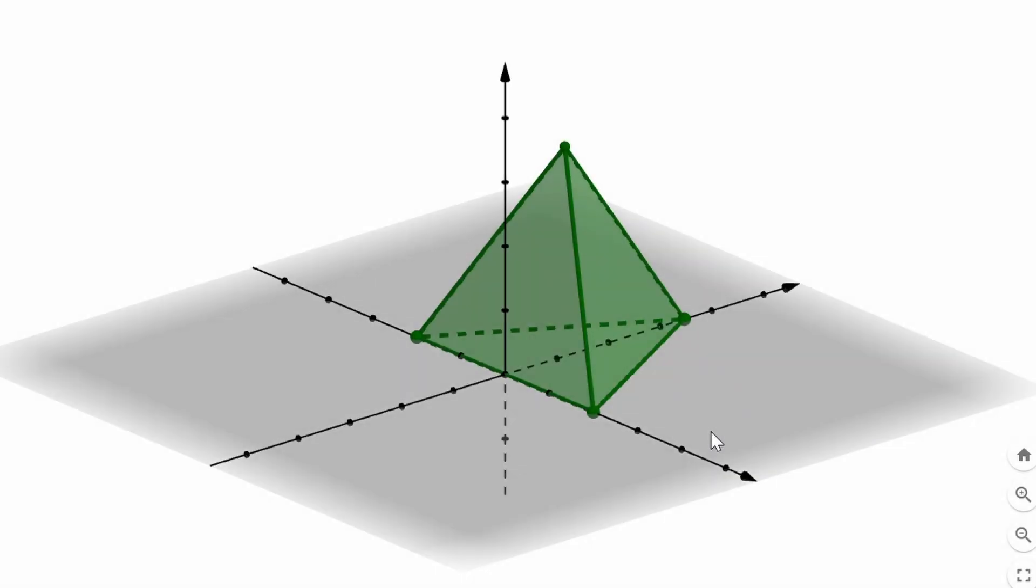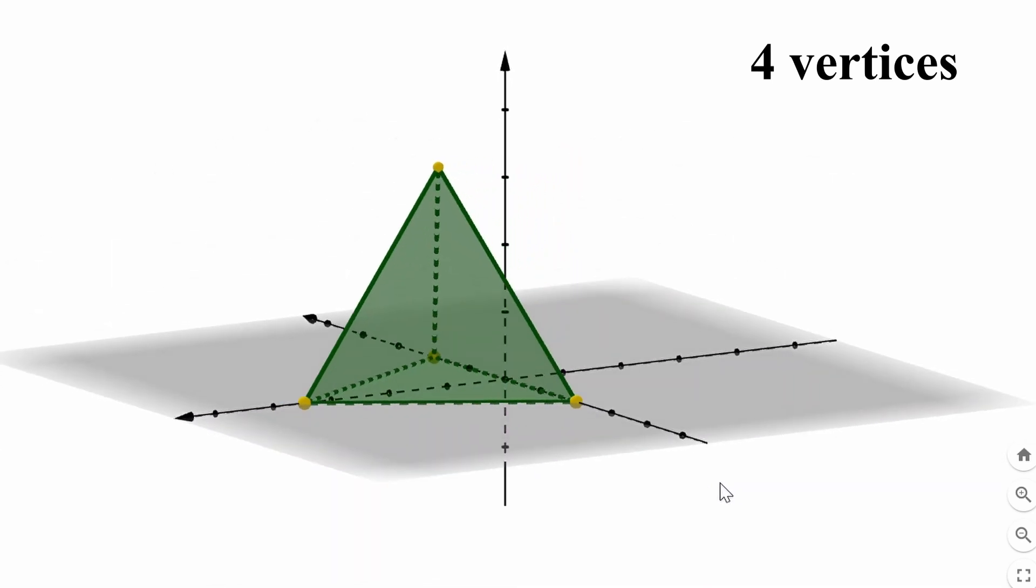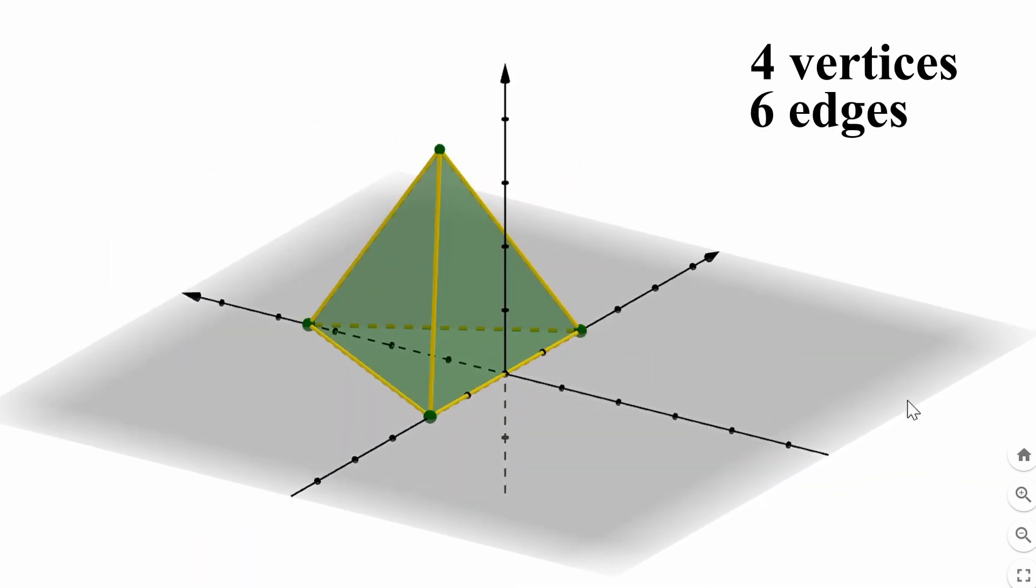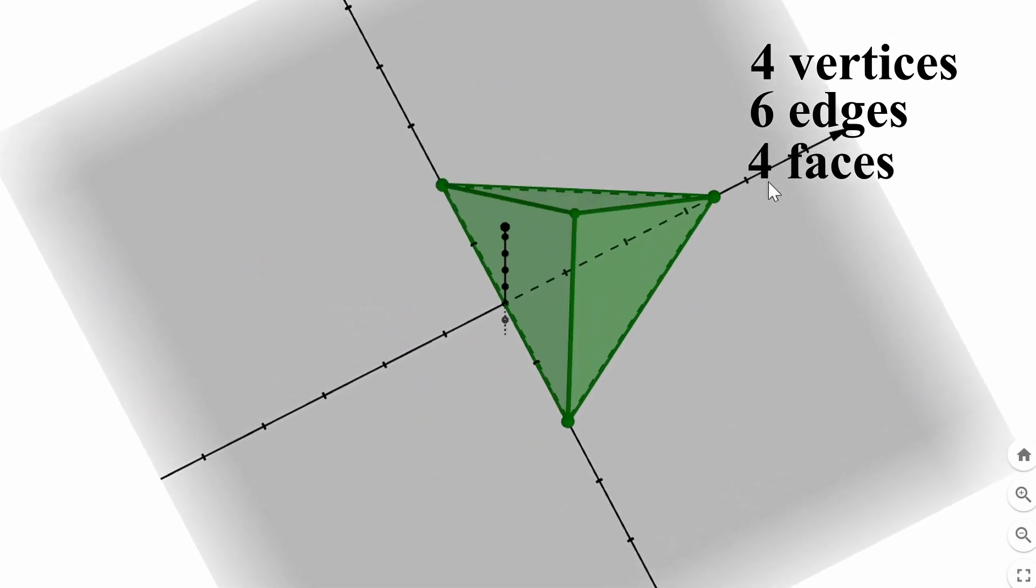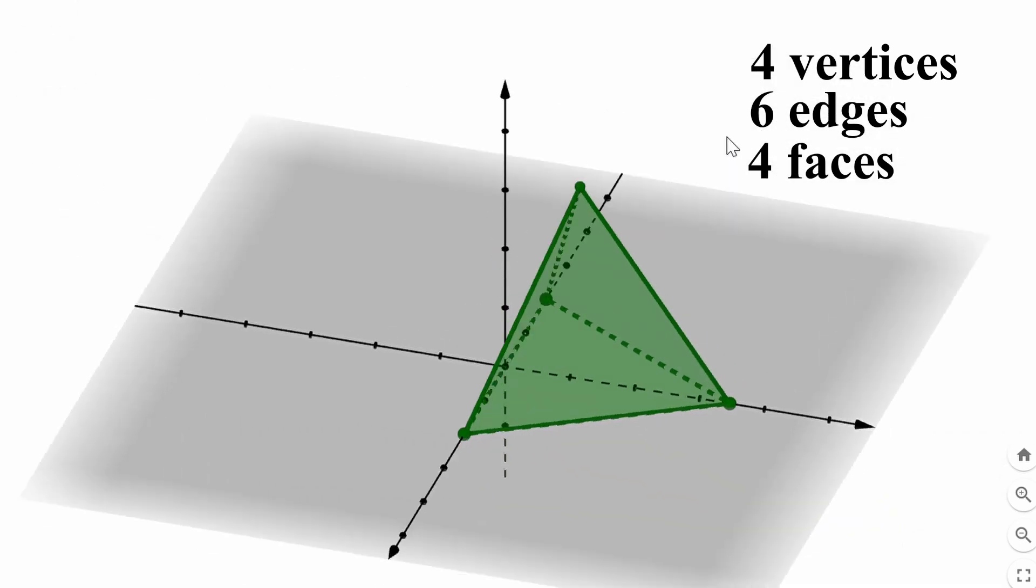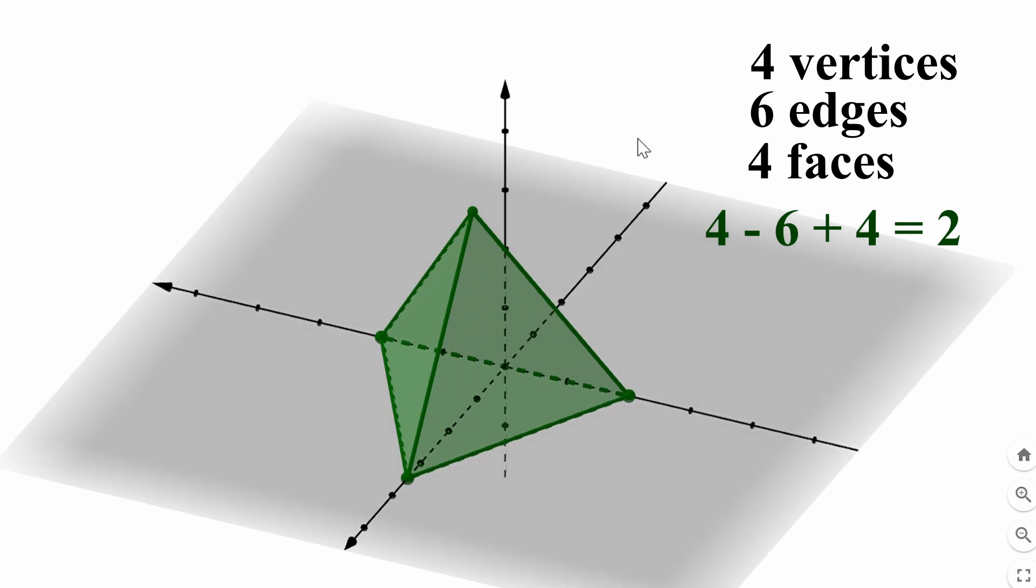The tetrahedron has four vertices, six edges, and four faces. And four minus six plus four is two.